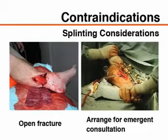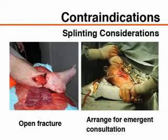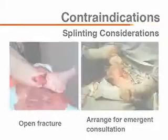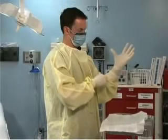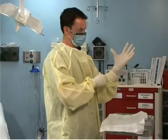An orthopedic specialist should be consulted for fractures requiring urgent surgical evaluation, such as open fractures, which may require operative management. Temporary splints can be placed to alleviate pain and to prevent additional injury while awaiting evaluation by a specialist. Use appropriate universal precautions for potential exposure to bodily fluids when open wounds are present.